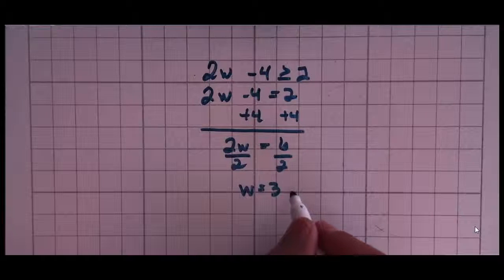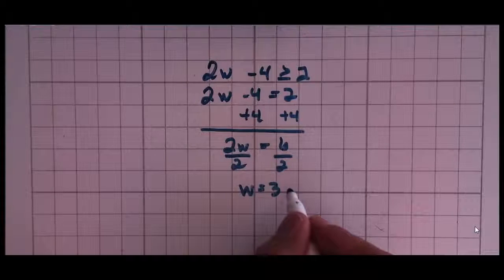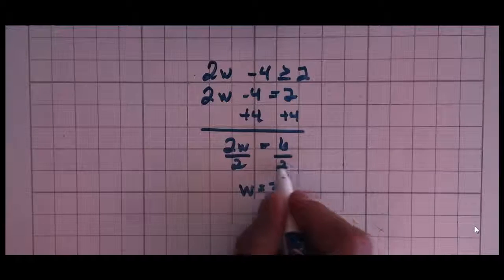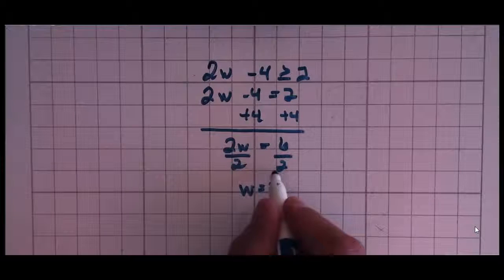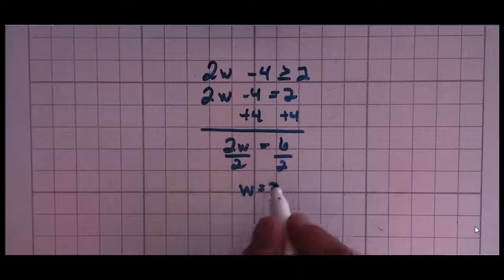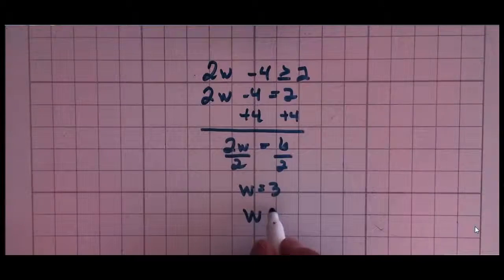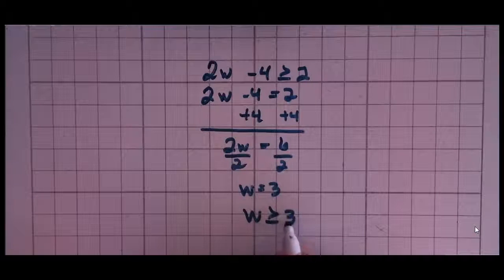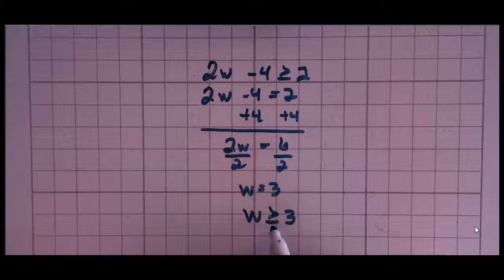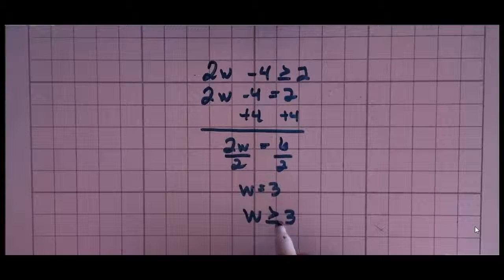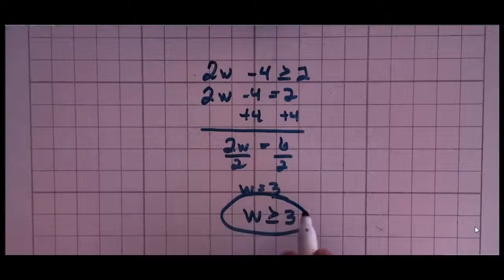w equals 3. And then you ask yourself, did I multiply or divide by a negative number? Well here's where I divided, but I divided by positive 2, so I did not multiply or divide by a negative number. If that's the case, I'm going to use this inequality and leave it exactly the way that it is. w is greater than or equal to 3. That's my solution.